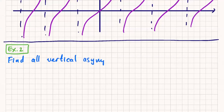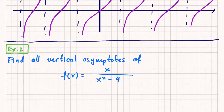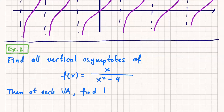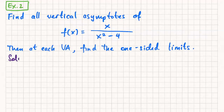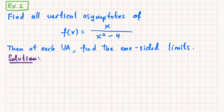Find all vertical asymptotes of x over x squared minus 4, then at each vertical asymptote find the one-sided limits. Now that you're actually given a function with an expression, how would you go about finding the vertical asymptotes?